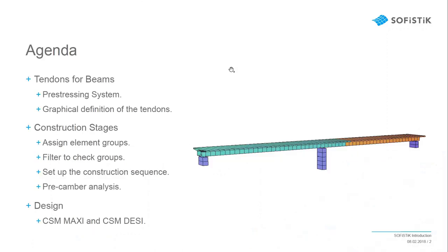The agenda for today covers our 2-span simple beam bridge. We'll discuss the tendons for the beams, the construction stages, and if time allows, a little about the design for this bridge. For tendons, we'll set up a pre-stressing system and graphical definition of the tendons. For construction stages, we'll assign element groups, look at the filter, set up the construction sequence, and examine the pre-camber analysis.